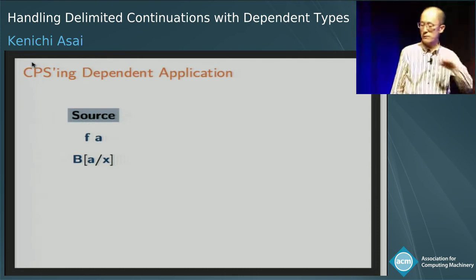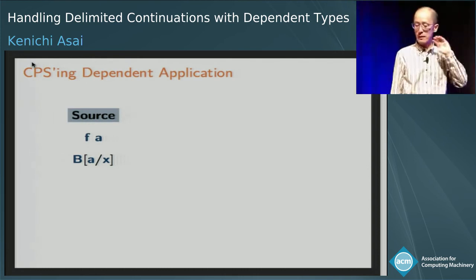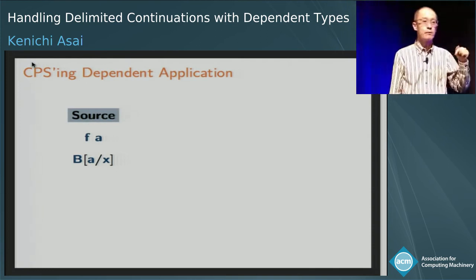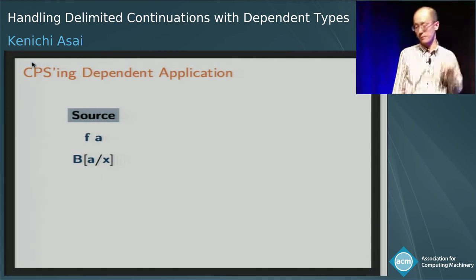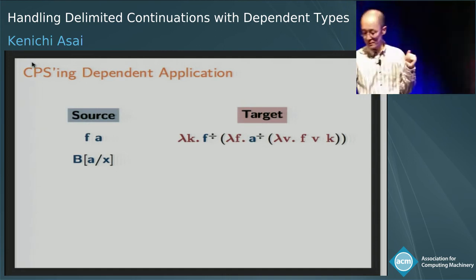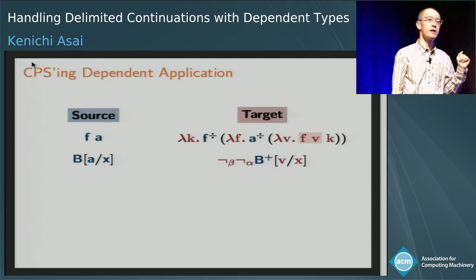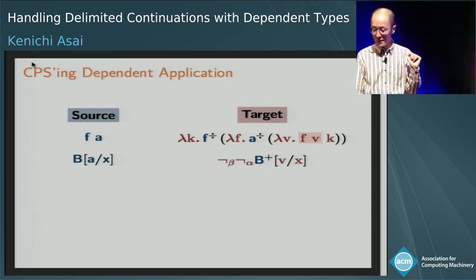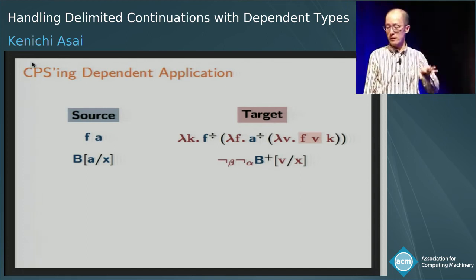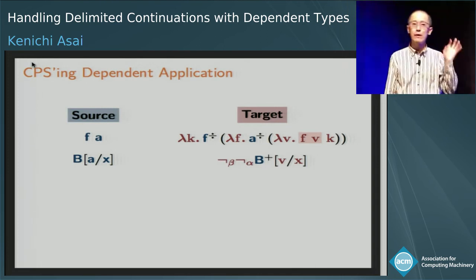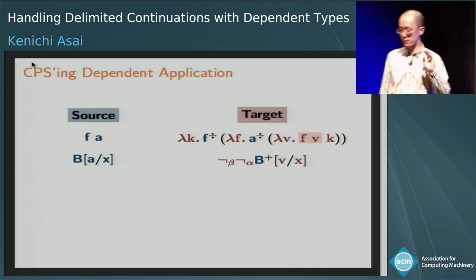To see how this restriction is required, consider the dependent application F of A, which has type B dependent on its argument A. If we CPS translate this expression, we obtain a term where F of V has the type shown, and in the target language B depends on V. This V does not appear in the source term, so there is no way to define a type-preserving CPS translation. We need to somehow relate V to the source term A.